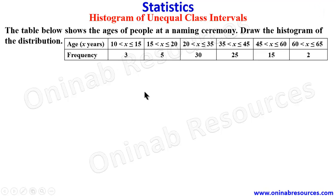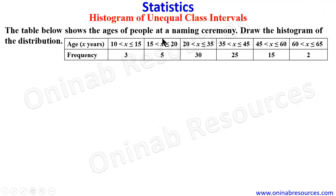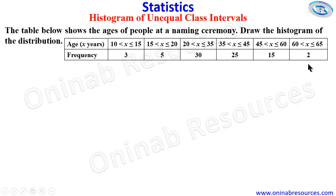How do we identify whether a distribution is of equal intervals or unequal intervals? We have to identify whether the table has equal class intervals or unequal class intervals. Looking at the differences: 15 minus 10 is 5, 20 minus 15 is 5, 35 minus 20 is 15, 45 minus 35 is 10. Immediately you identify that a particular class interval does not have the same class width — that means it is an unequal class interval.